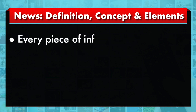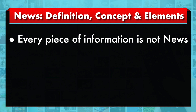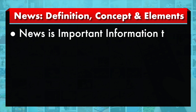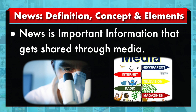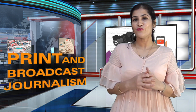Every piece of information is not news. We seek information that may have value to us at an individual level, which may not be necessary for a group, and vice versa. News is important information that gets shared. A discovery made by a scientist is only important information until it remains with the scientist or the team. If and when it becomes available to a large number of people, it can be considered as news.